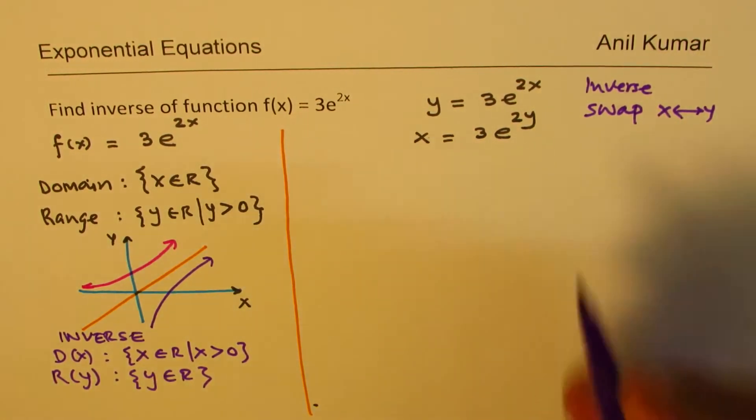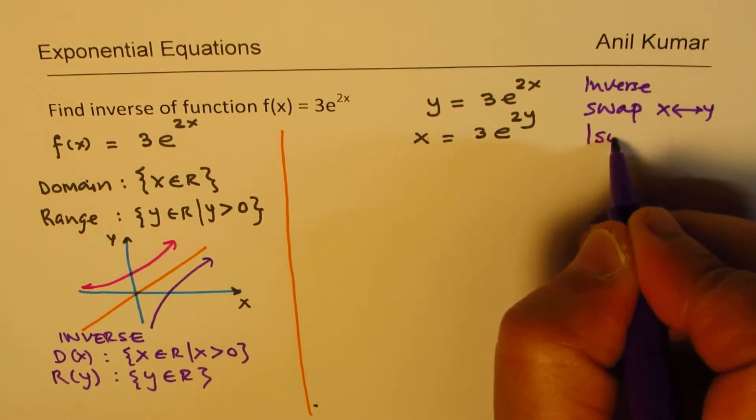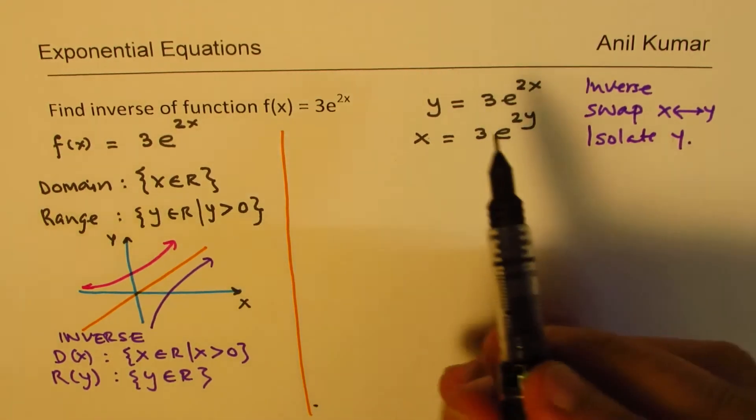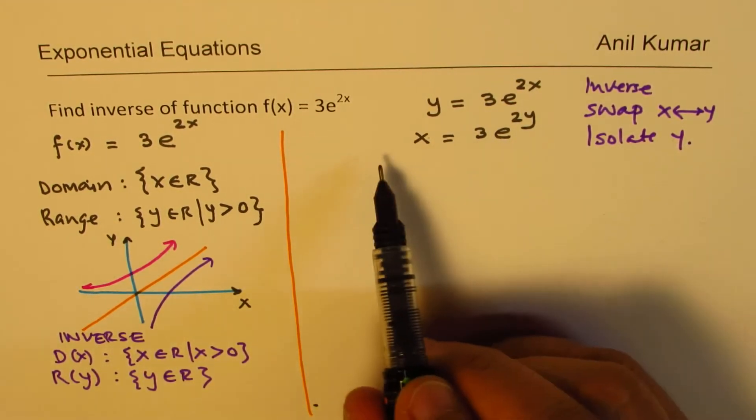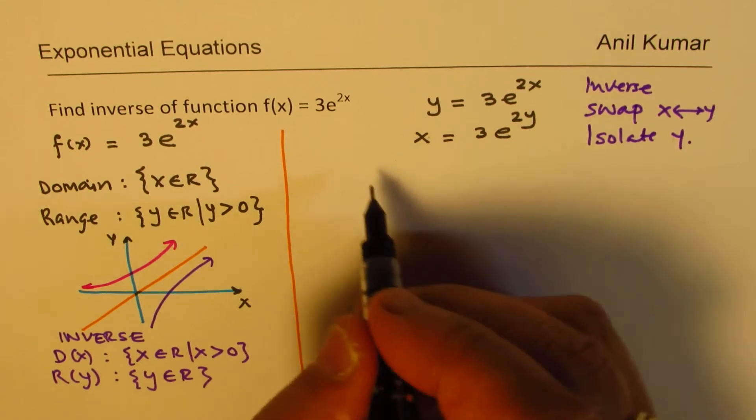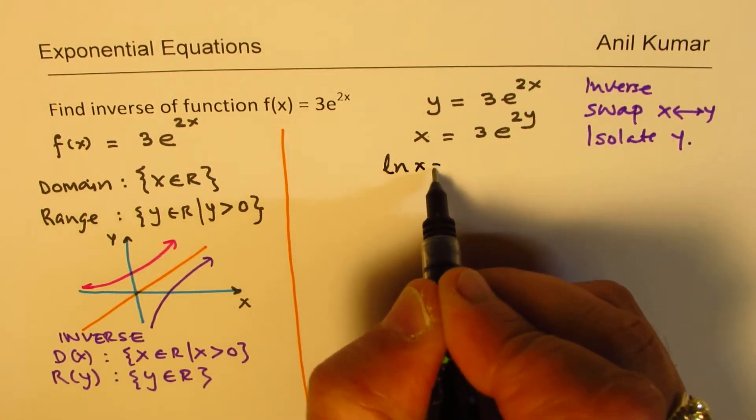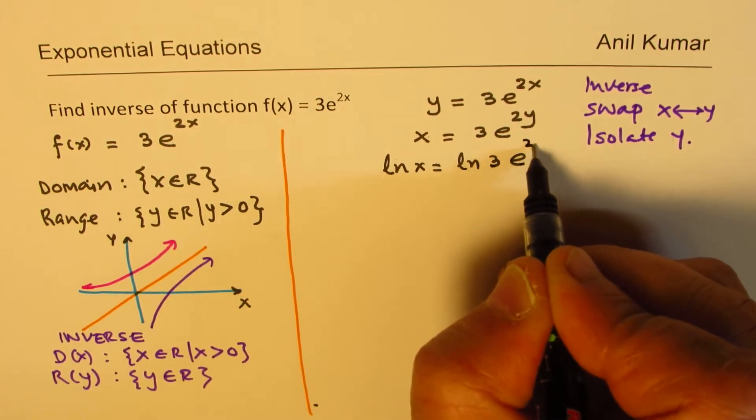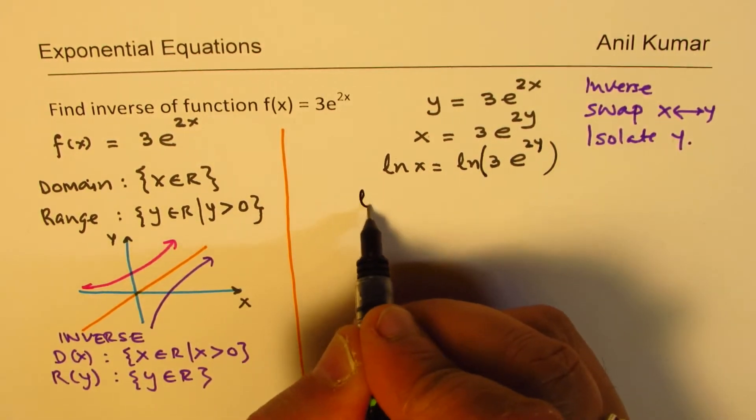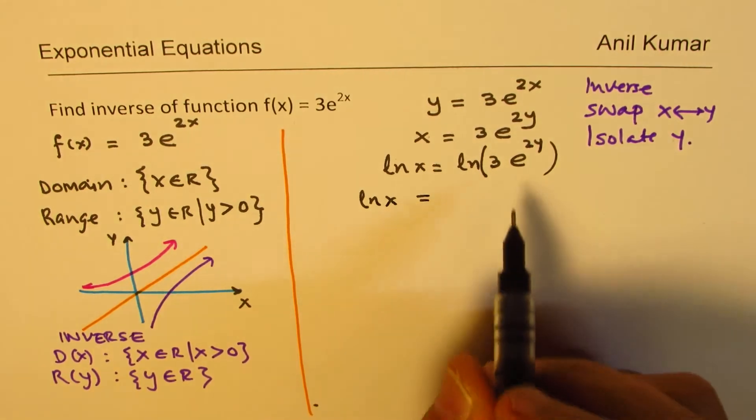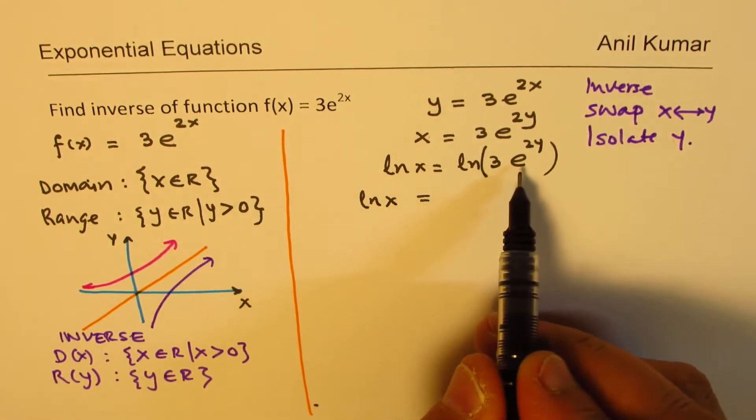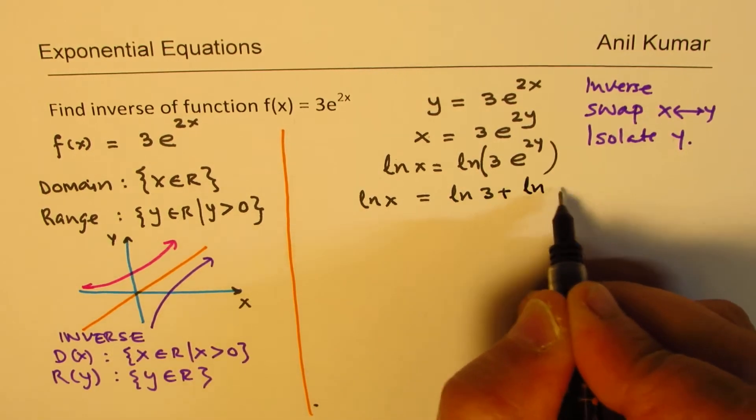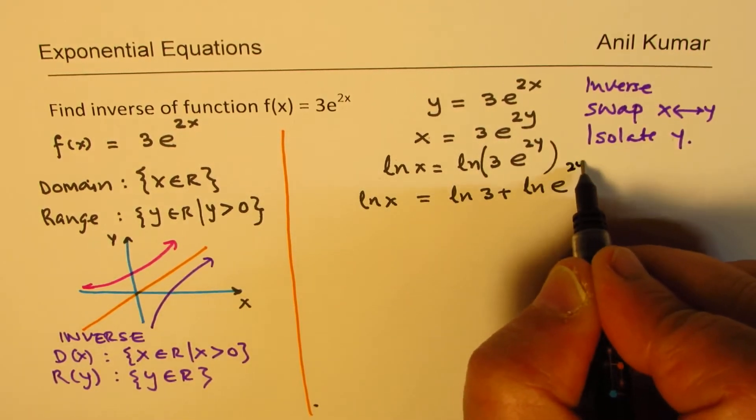Now, we need to isolate y. Since we are working with e, we can take natural log both sides. So, we get ln(x) equals ln(3e to the power of 2y). We can apply the product rule. So, it will be written as ln(3) plus ln(e to the power of 2y).